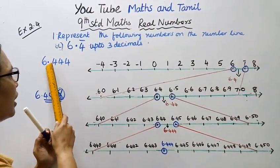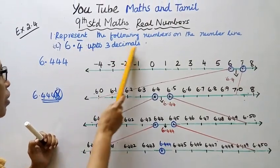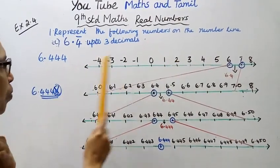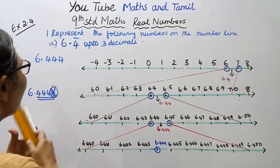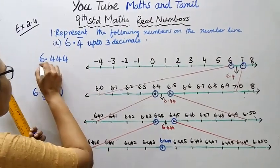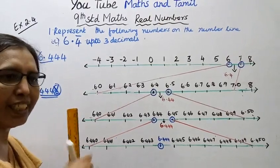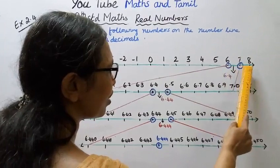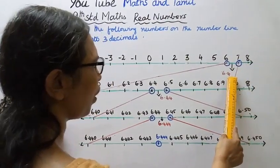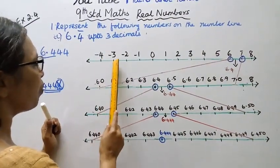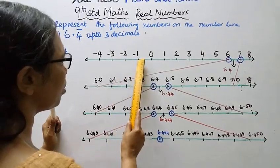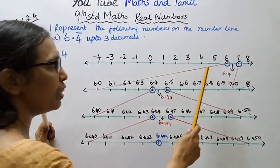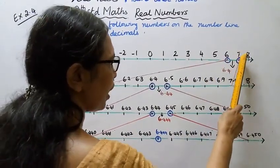6.444 — we need 3 decimals, so 6.444. We identify the integer part: the number lies between 6 and 7 on the number line. So we get 6, 7, 8 — that's how we locate the region between 6 and 7. We get 6, 7, 8.